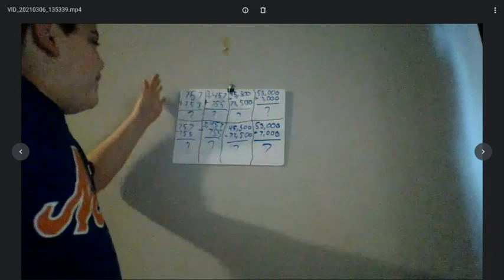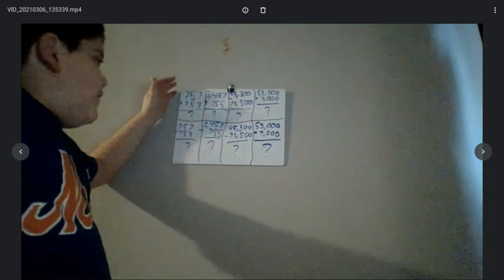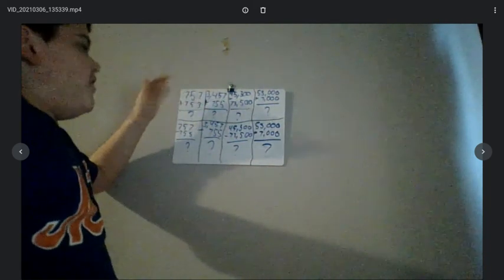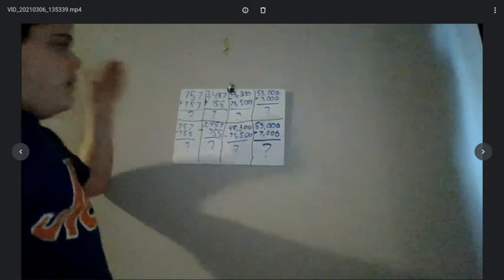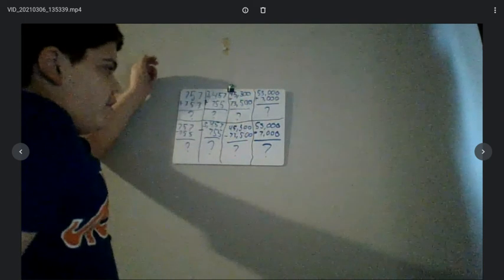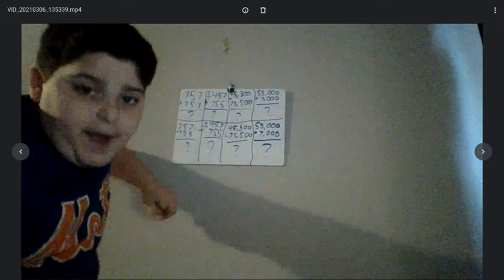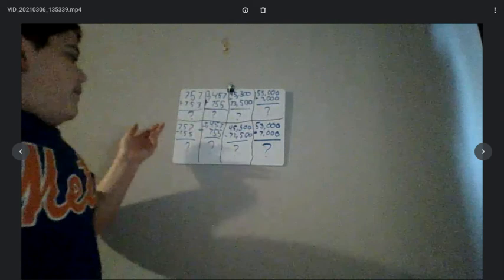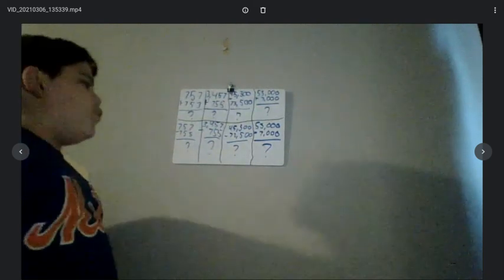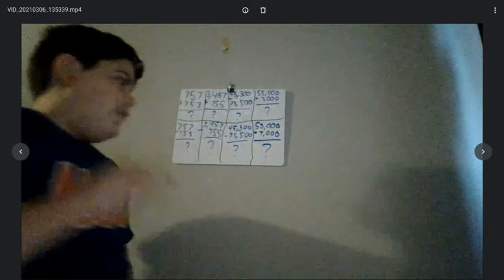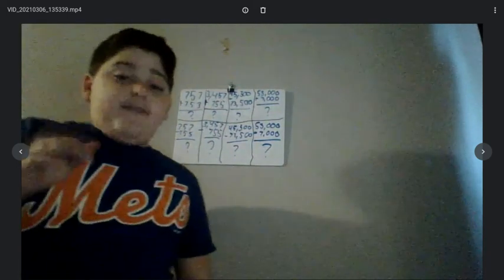Problem 1 is 757 plus 753. The next one is 3,457 plus 755. And over here, this is a slightly harder one: 45,300 plus 73,500. And then over here it's 53,000 plus 7,000. And then on the bottom, on the subtraction side, it's 757 minus 753. And then the next one is 3,457 minus 755. And then this one here is 45,300 minus 73,500.